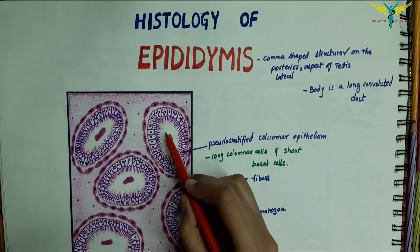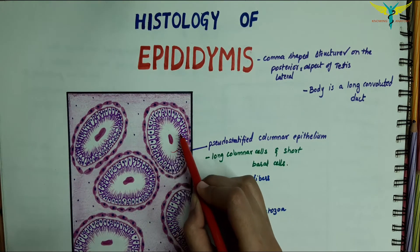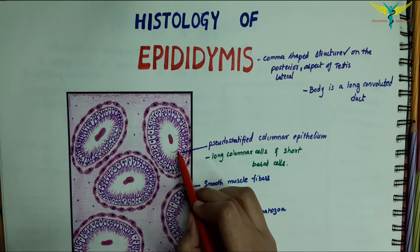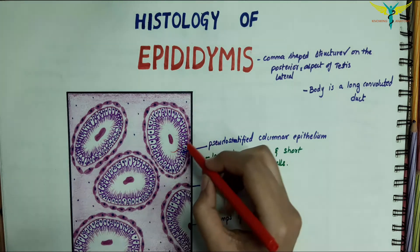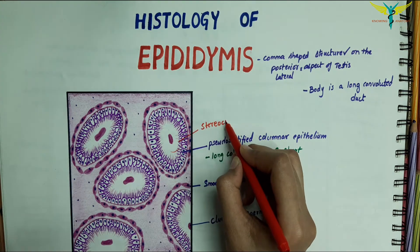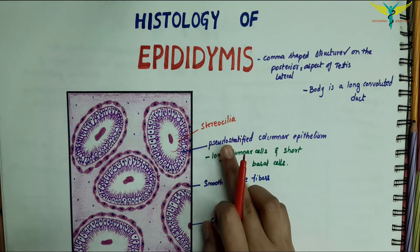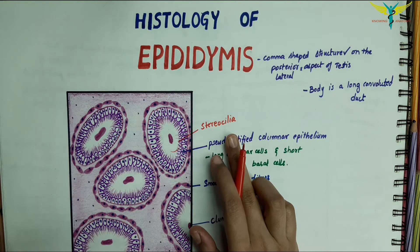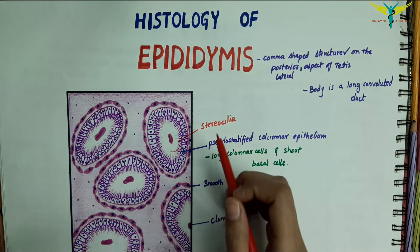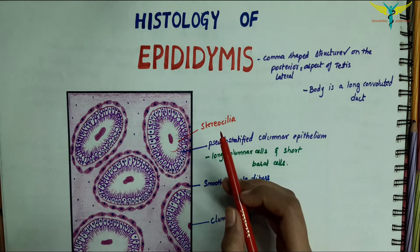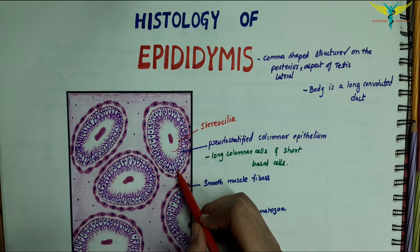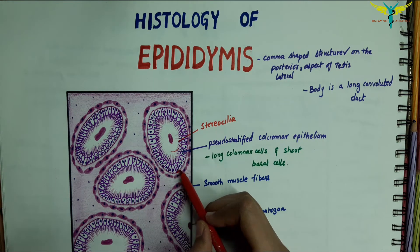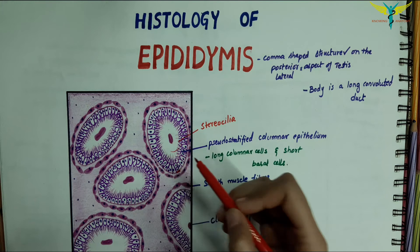The luminal surface of each columnar cell bears non-motile projections that resemble cilia — these are the stereocilia. In the electron microscope, stereocilia are seen to be thick microvilli; they do not have the structure of true cilia. The basal cells are the precursors of the tall columnar cells.